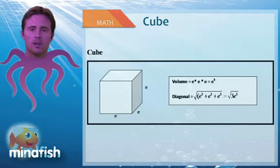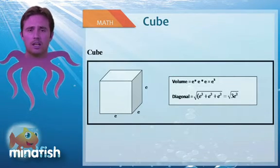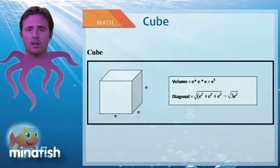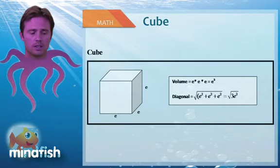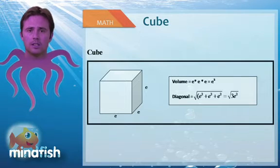For a cube, the volume is equal to edge times edge times edge, which is edge cubed. And again, if you want to know the distance of the diagonal across a cube, it's the square root of edge squared plus edge squared plus edge squared, which is the square root of 3 edge squared.